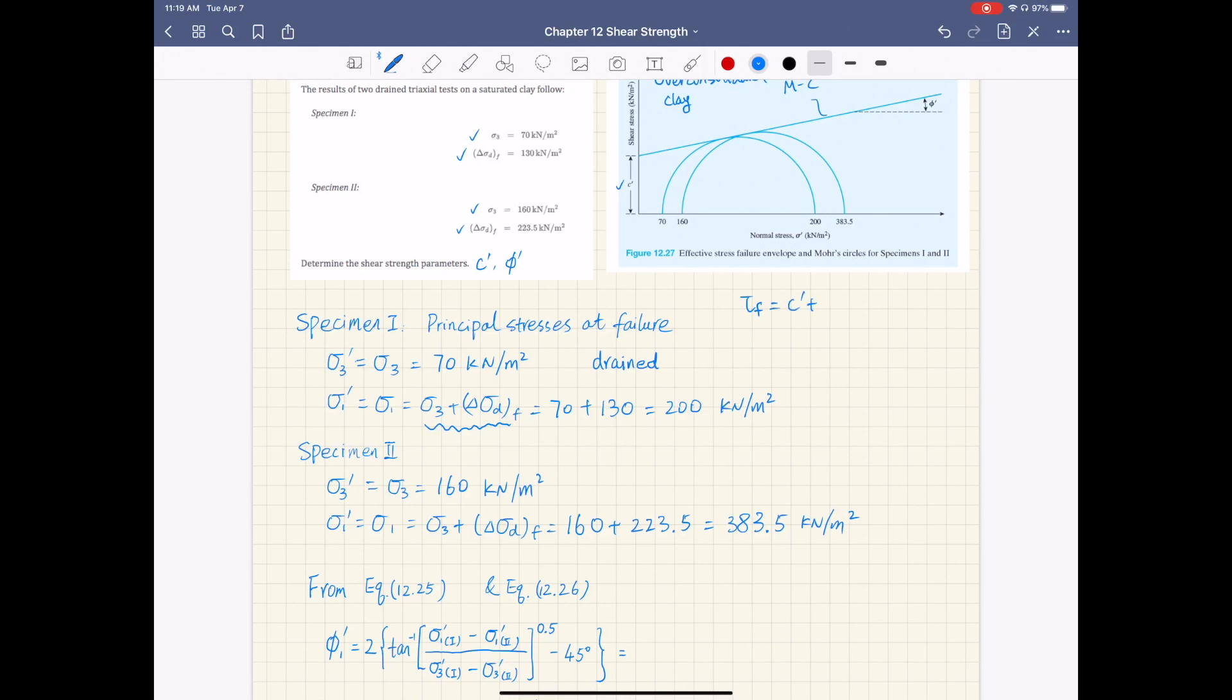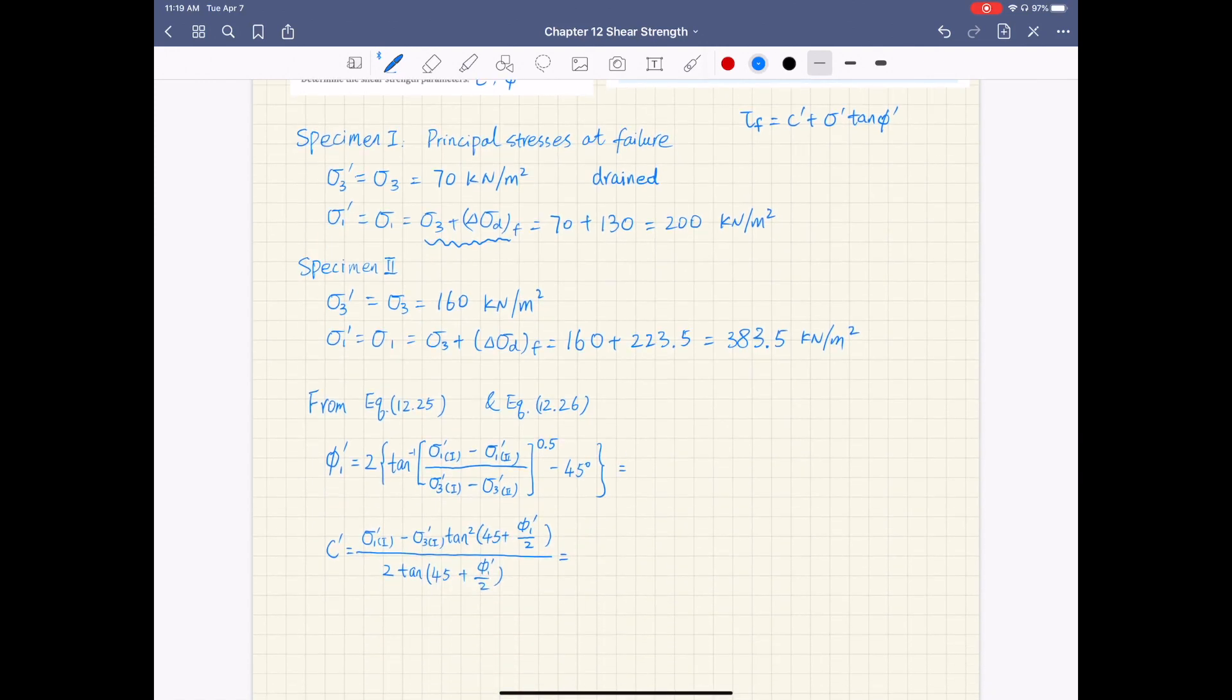And also, you make use of the fact that the Mohr-Coulomb failure envelope is tangent to both Mohr circles at failure. So then you can derive the expressions for these two shear strength parameters.